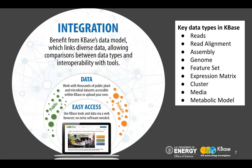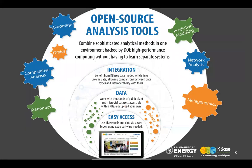The most important thing is integration. KBase has an internal representation of genomes and their annotations, metagenomes, expression, and metabolic models — these are called data types. This integration is benefited from KBase's data model, which links diverse data and allows comparisons between data types and interoperability with tools. On top of the data and built-in applications, KBase provides user access to a variety of open-source analytical tools covering genomics, metagenomics, comparative analysis, omics, and network analysis, all combinable in one narrative interface environment.